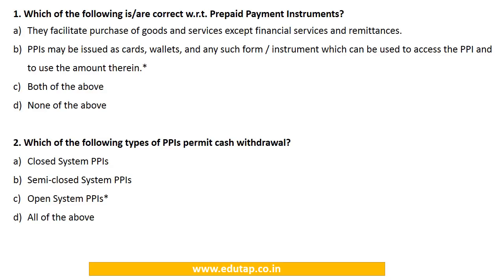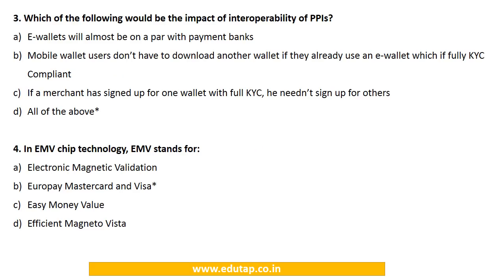Now let's look at some MCQs. Question 1: Which of the following is correct regarding prepaid payment instruments? (A) They facilitate purchase of goods and services except financial services and remittances. (B) PPIs may be issued as cards, wallets, and any such form or instrument to access the PPI. (C) Both. (D) None. Since PPIs do include financial services and remittances, option A is incorrect — the answer is option B.